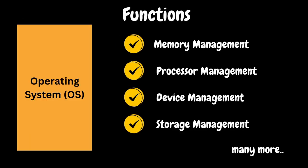Some of the common functions of the operating system include: memory management — allocating and deallocating main memory for various processes; processor management — managing the CPU's time and resources among various processes; device management — regulating connection and interaction with input and output devices through device drivers; and storage management — storing and accepting files and directories, and optimizing the use of various storage devices. There are many more functions as well.